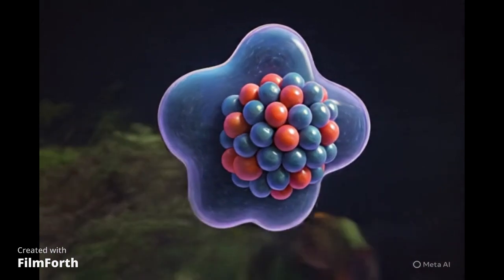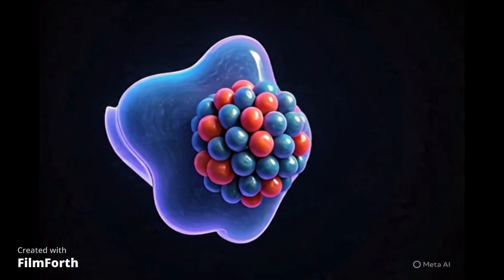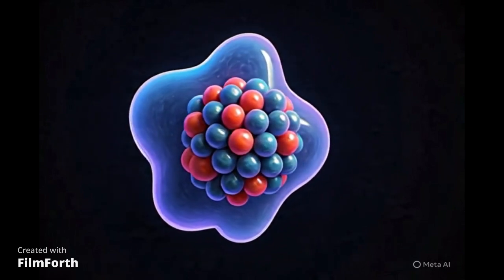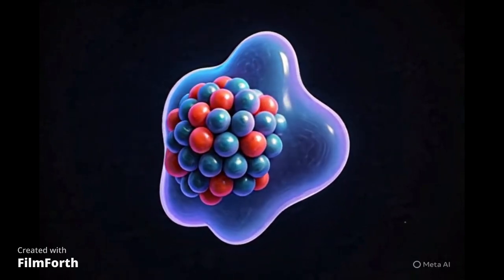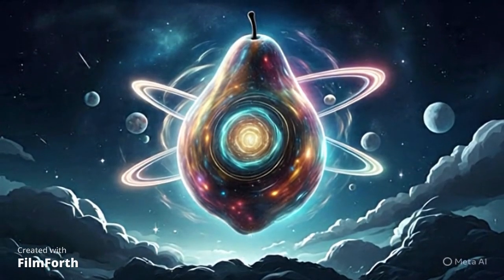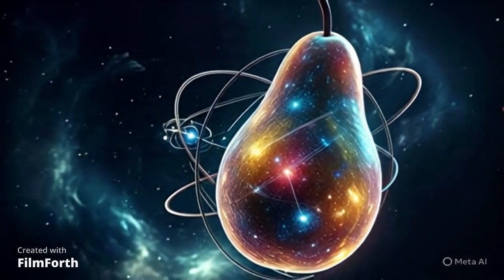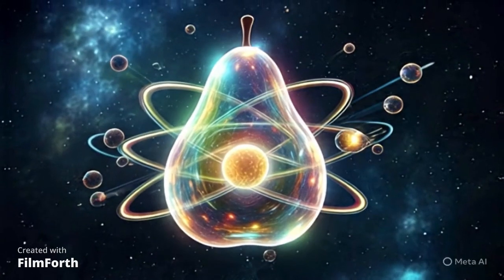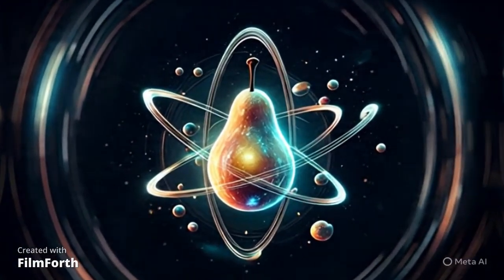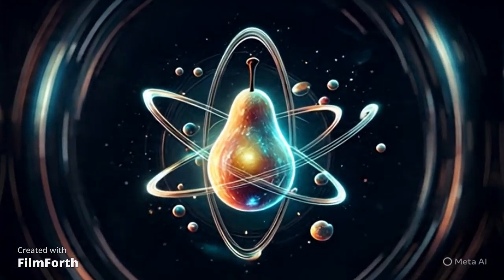Some nuclei are even more intricate, exhibiting what we call a triaxial shape. Imagine a shape with three axes of different lengths. It's no longer a simple stretch or flattening, but a more lopsided, three-dimensional irregularity. And in some fascinating cases, particularly with certain unstable nuclei, we even encounter pear-shaped nuclei. This asymmetry, this bulge on one side, is linked to some very fundamental aspects of physics, hinting at subtle imbalances within the nuclear structure.